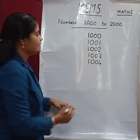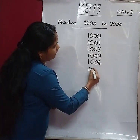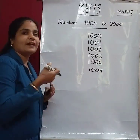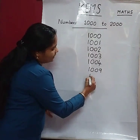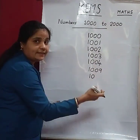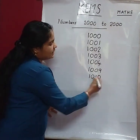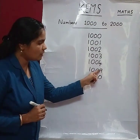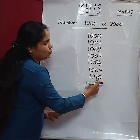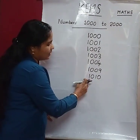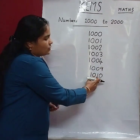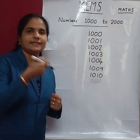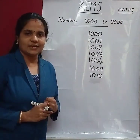Clear? So children, which is the after number of 1000? The answer is 1001. Now, after 1009, the next number is 1010. After 9 comes 10, so the last 2 digits change. 1010, 1011, 1012, 1013, 1014 — and so on. Clear?